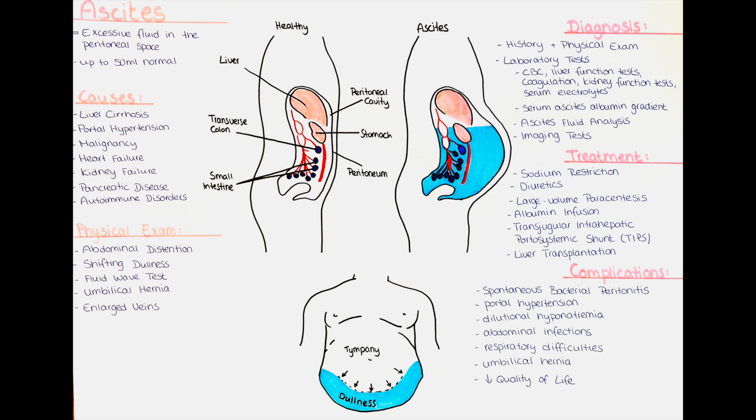A diagnostic algorithm typically starts with a set of initial steps, such as taking a detailed medical history, conducting a physical examination, and performing specific tests or investigations. Based on the results of these initial steps, the algorithm directs the doctor to further diagnostic tests or specialized evaluations to narrow down the possible causes and to reach a definitive diagnosis. As the algorithm progresses, the tests usually become more invasive and time-consuming.